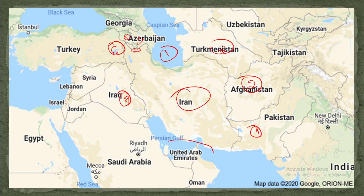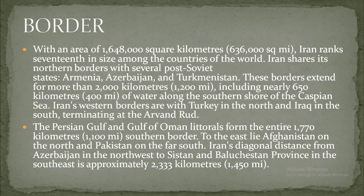This is Iran and Tehran is located here. With an area of 1,648,000 square kilometers, Iran ranks 17th in size among the countries of the world.